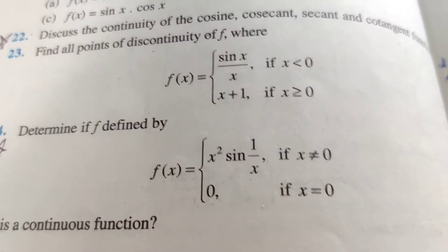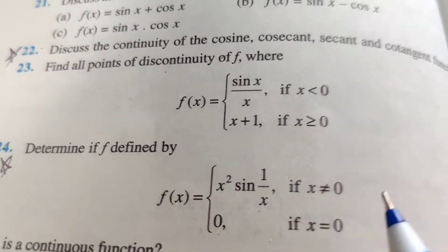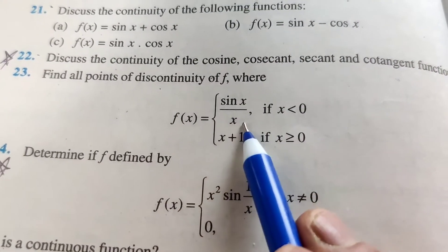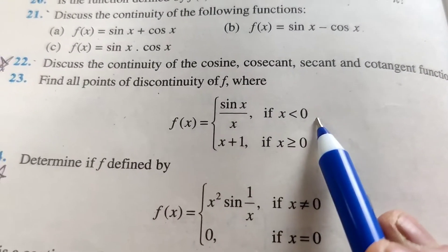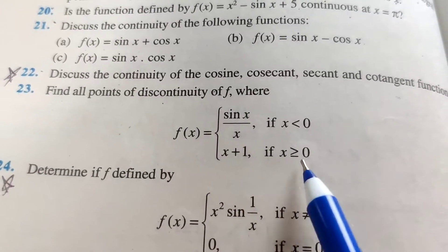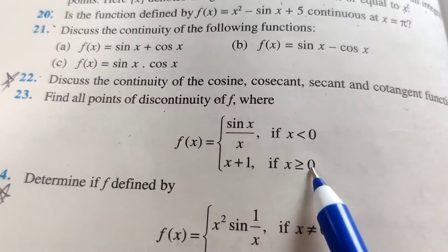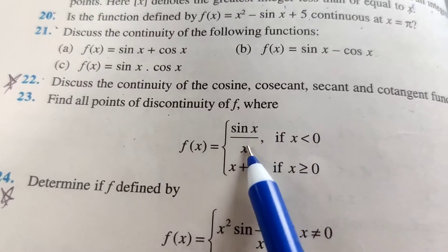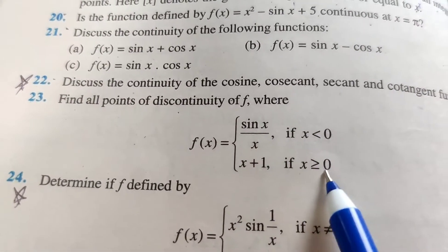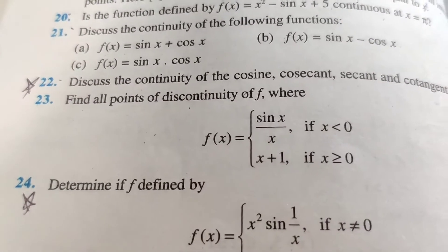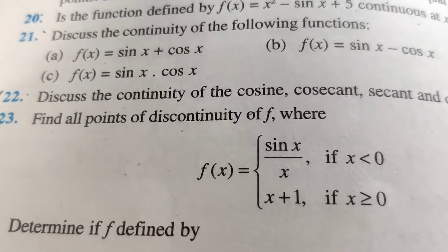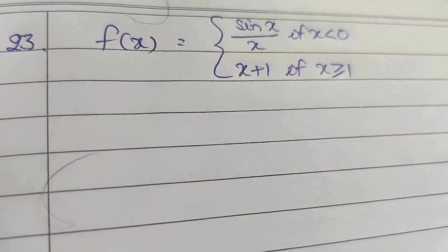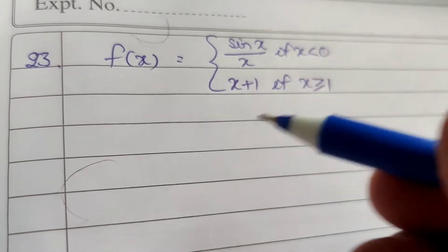Question number 23. Find all points of discontinuity of f, where the function is sin x upon x if x is less than 0, and x plus 1 if x is greater than or equal to 0. Now check the continuity of the function, in particular at x equal to 0.